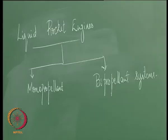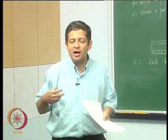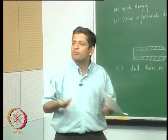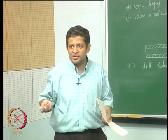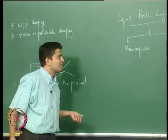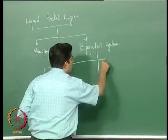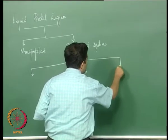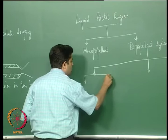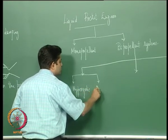A mono-propellant system is one wherein the propellant decomposes in an exothermic fashion and the energy is released. Whereas in a bi-propellant system you have fuel and oxidizer which mix and burn to give high pressure and high temperature. The bi-propellant systems are themselves further classified as hypergolic and non-hypergolic.